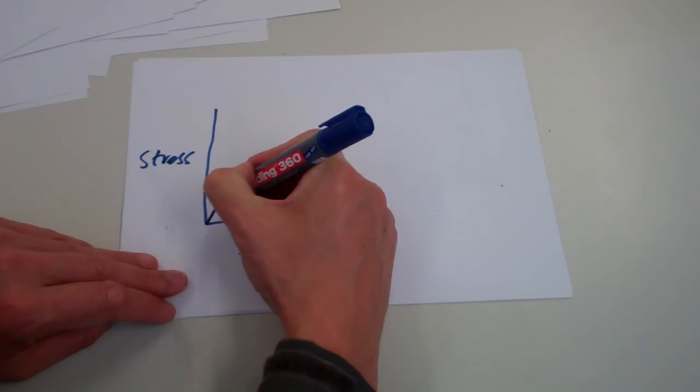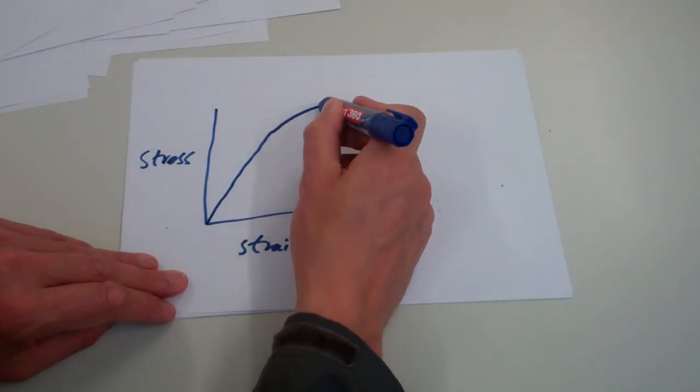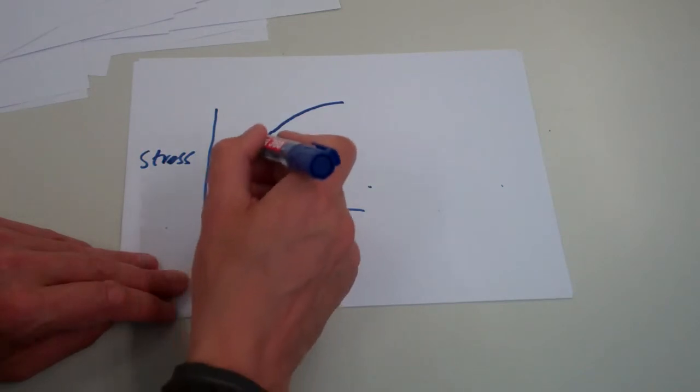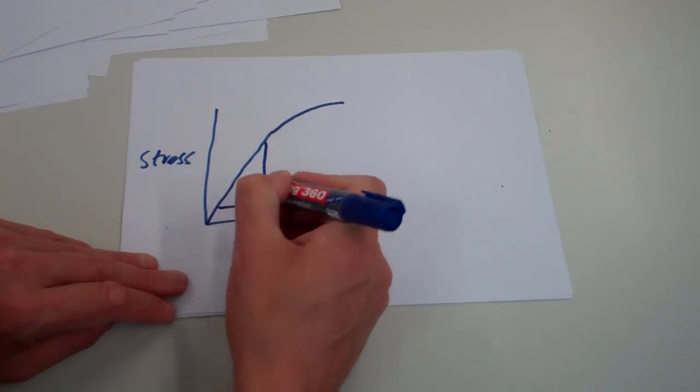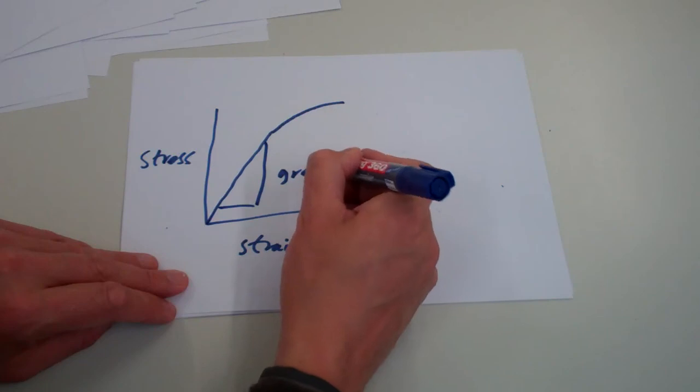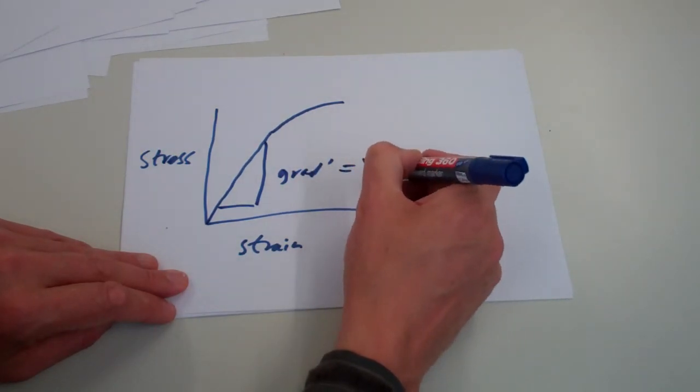And hopefully we'll get a nice straight line graph coming through the origin followed by an area of plastic deformation. And it's the gradient of this linear section, only the linear section, that is equal to Young's modulus.